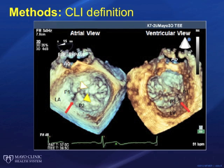In our study, diagnosis of cleft-like indentation by echocardiography was defined as a visible defect seen during systole, occupying the inter-scallop region of the posterior leaflet and extending at least one half of the depth of the adjacent mitral scallop.